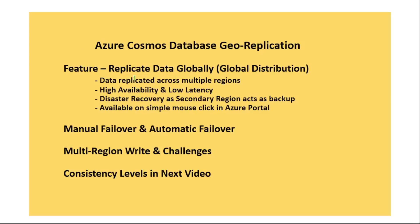In this video, let's discuss Azure Cosmos Database geo-replication. We have a feature called 'Replicate Data Globally' in the Azure portal. With this, Azure Cosmos Database data is replicated across multiple regions, giving us high availability and low latency. It also acts as a disaster recovery mechanism in case our primary region fails, and it's available with a simple mouse click.